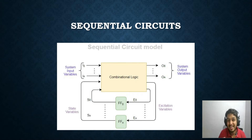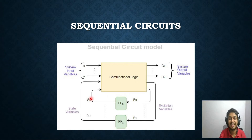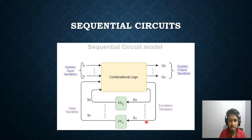That's why it's called an excitation variable — it excites the state of the flip-flop to change. These excitation variables are functions of both the input variables and the state variables. The state variables represent the state of the flip-flop itself, and this is a universal circuit model which applies to all sequential circuits.